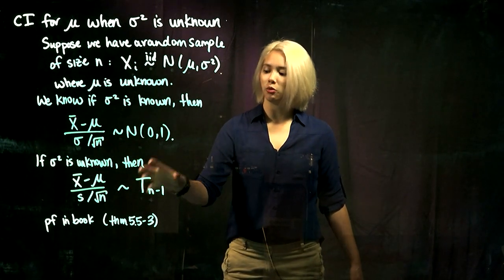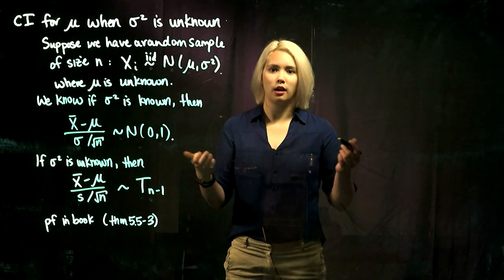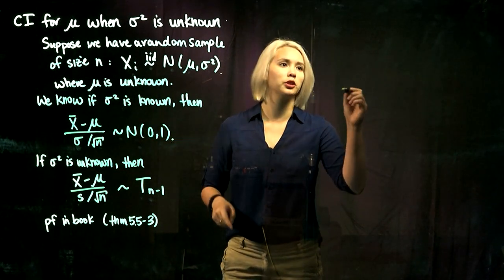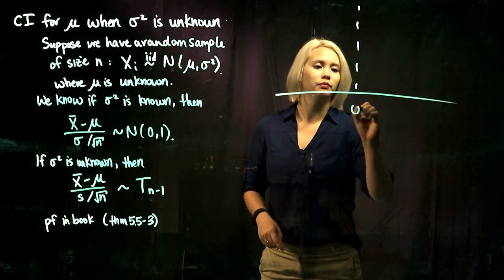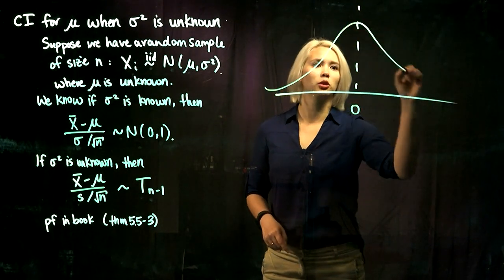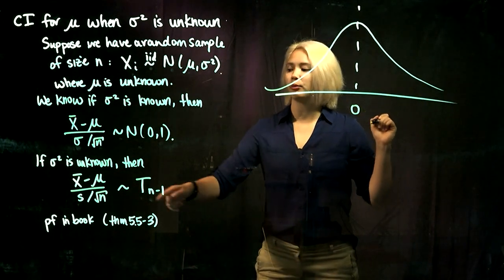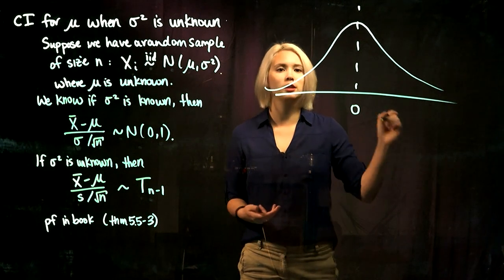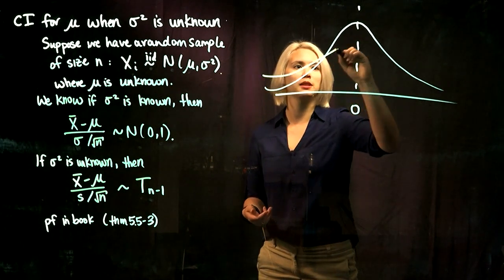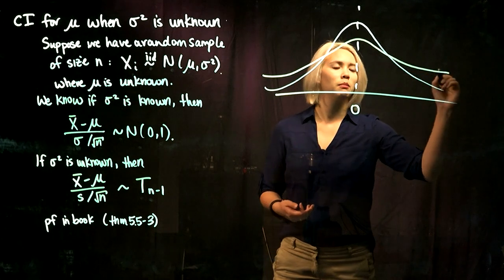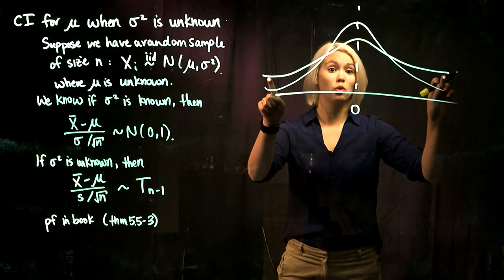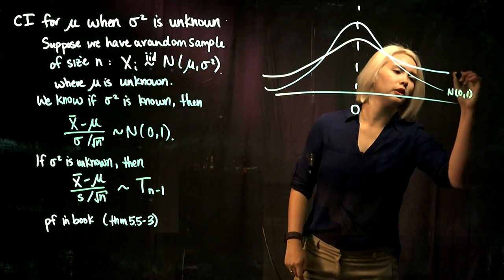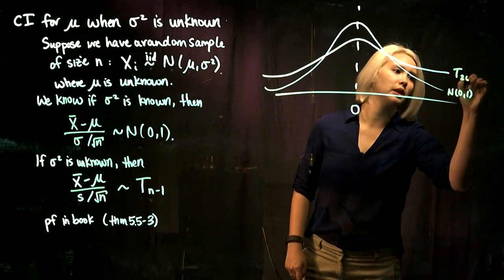So we have the t-distribution with n minus 1 degrees of freedom. To build some intuition on what the t-distribution looks like compared to the standard normal distribution: the t-distribution is still centered at 0, but it has heavier tails — more probability in the tails and less in the center. So compared to the standard normal, a t-distribution with maybe 20 degrees of freedom has those heavier tails.